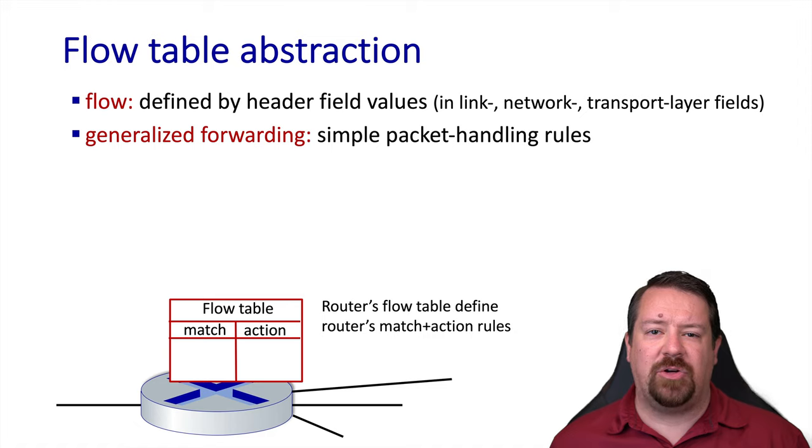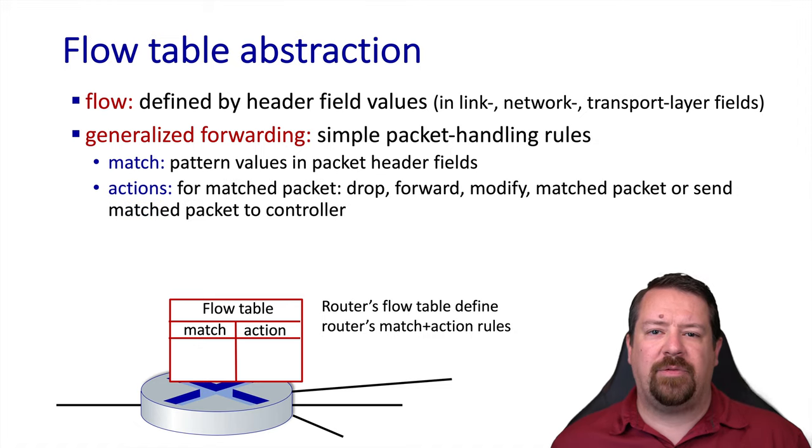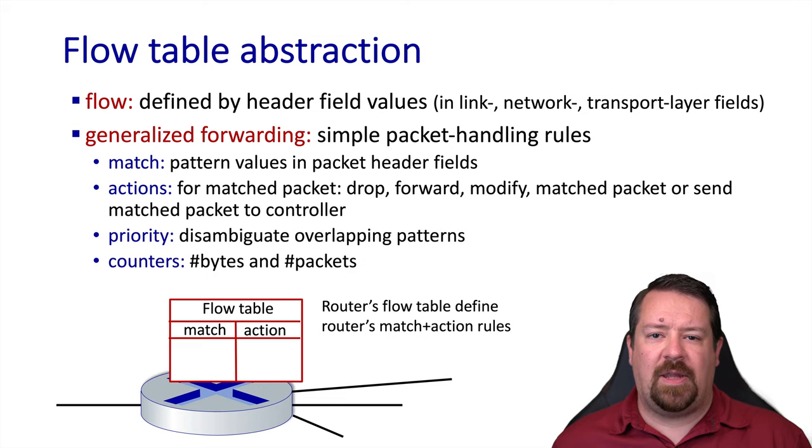The forwarding fields define the actions to take when a flow rule is matched. Note that unlike our traditional IP behavior, this is an exact match, not a longest prefix match. If the action required for a particular packet is too complex for the router to perform, it can be configured to send this off to the controller, which is the server that configures the flow rules in the first place. If a packet matches more than one rule, the respective priority of those rules will determine which action is taken. The router will also keep track of how many packets and bytes match each of the rules.